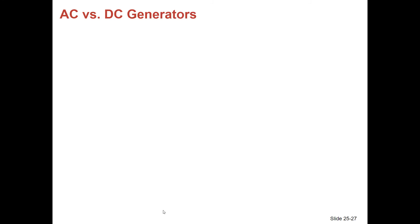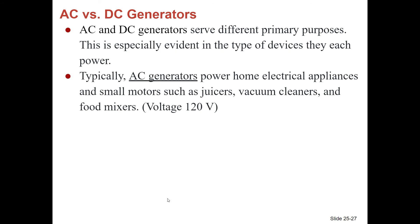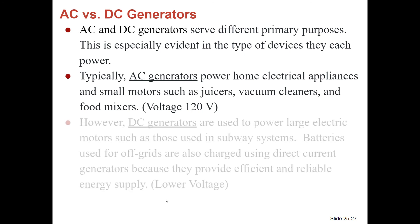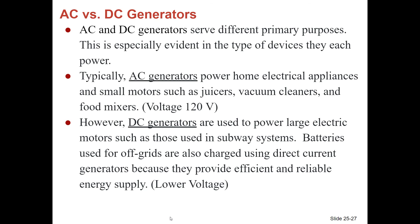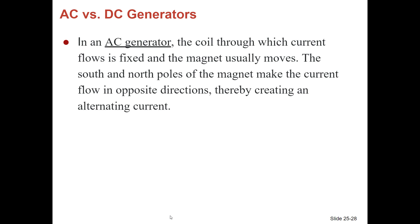There are AC generators and DC generators. AC generators typically power home electrical appliances and small motors such as juicers, vacuum cleaners, and food mixers, operating at 120 volts. DC generators are used to power large electric motors, such as those used in subway systems. Batteries used for off-grid applications are also charged using DC generators, which provide efficient and reliable energy supply but at a lower voltage — not 120 volts. In an AC generator, the coil is fixed and the magnet moves; the south and north poles of the magnet make the current flow in opposite directions, creating alternating current.